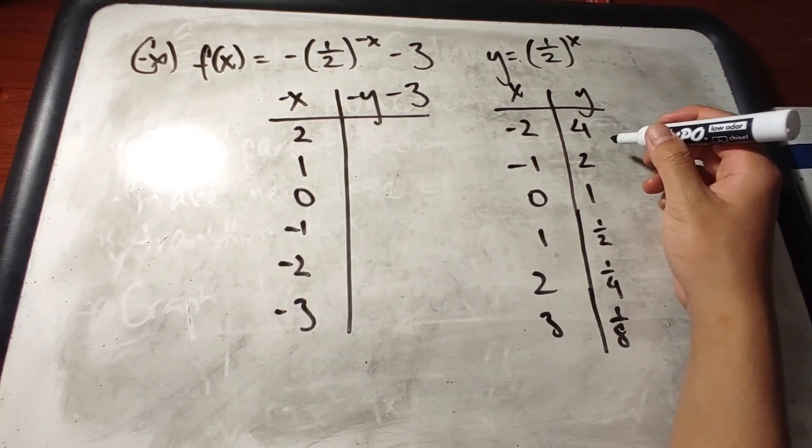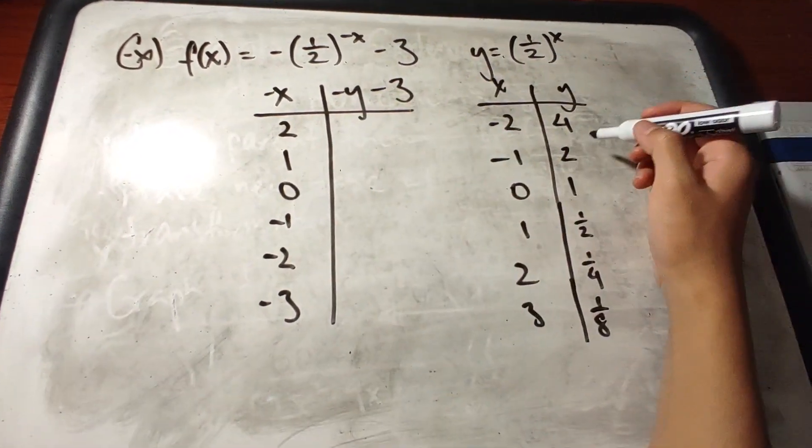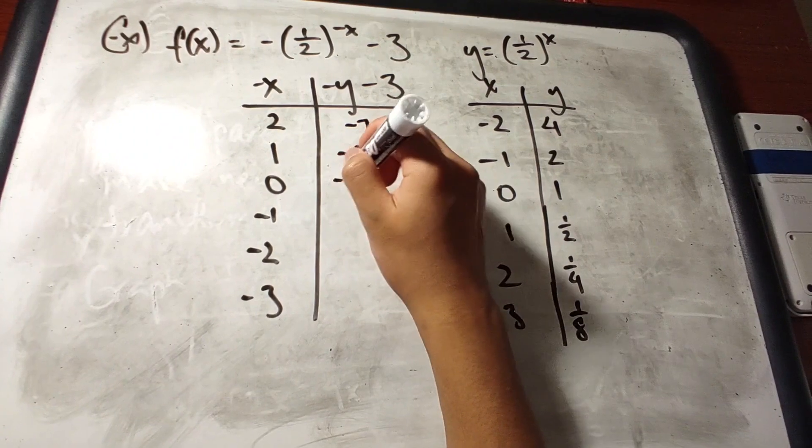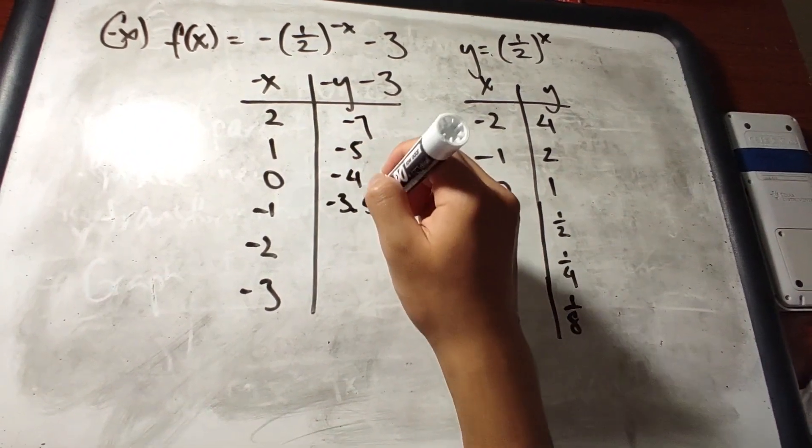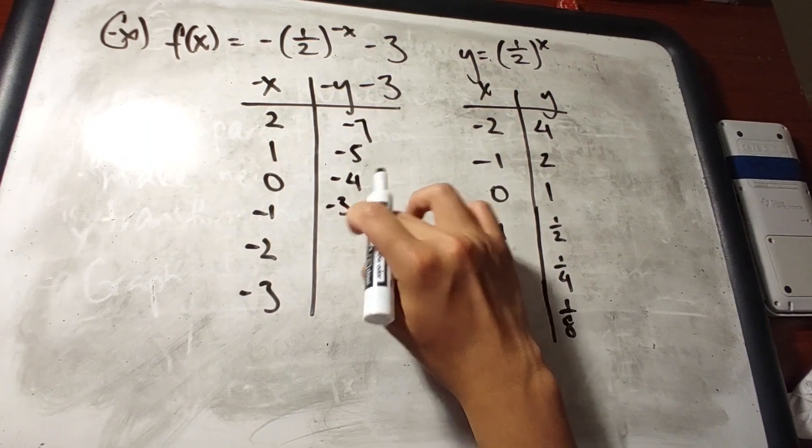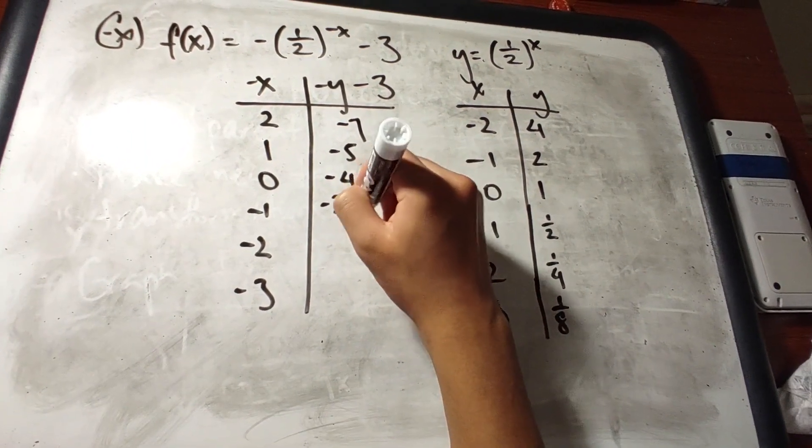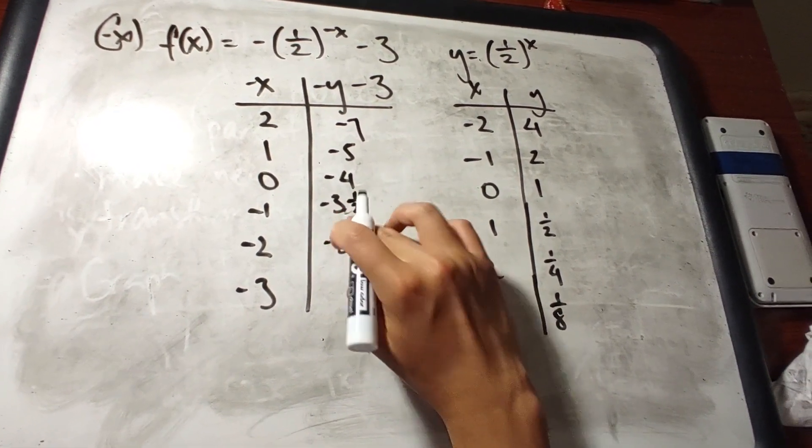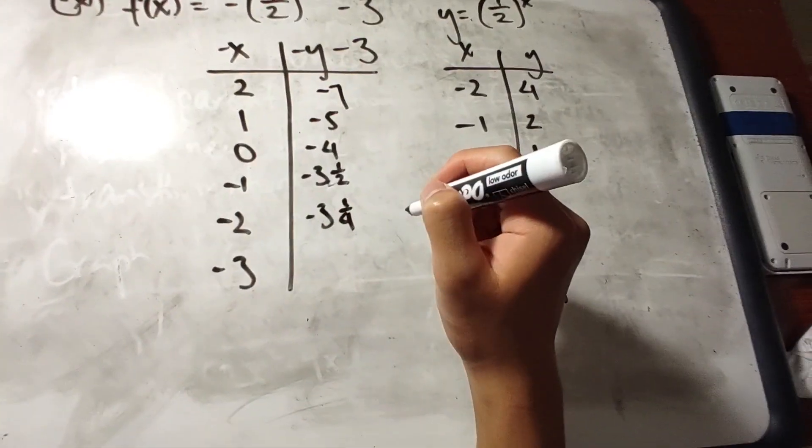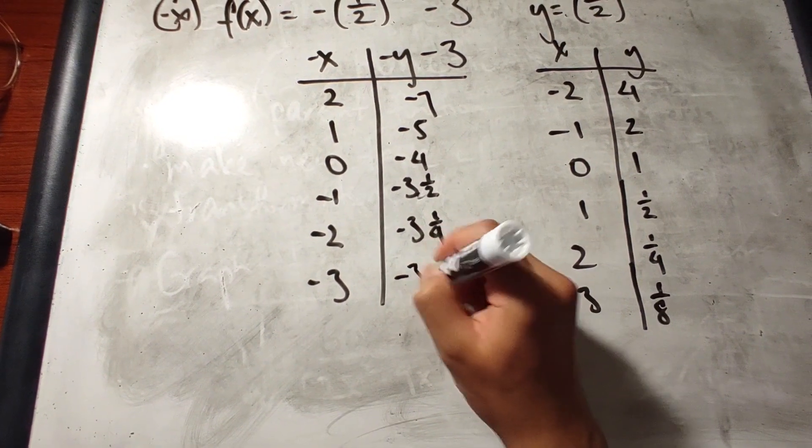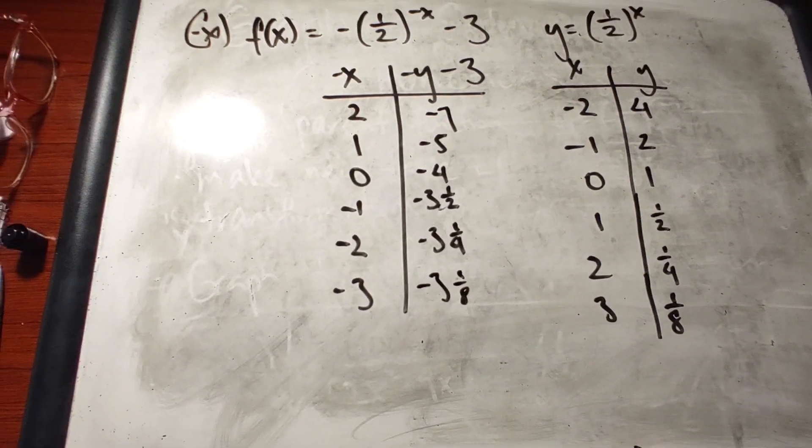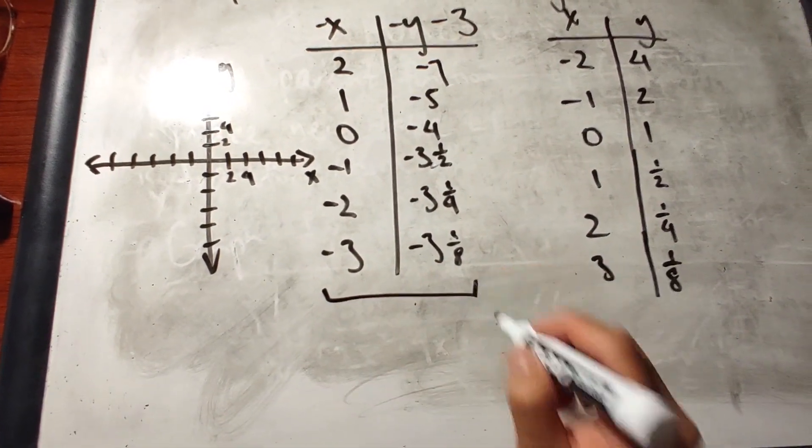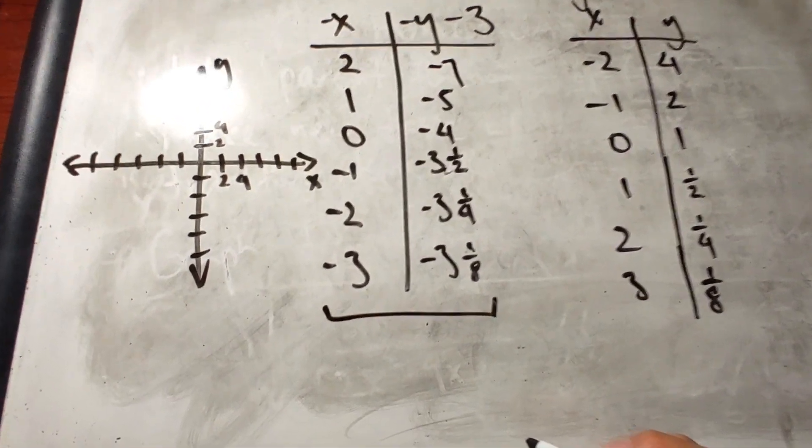When we apply this transformation to these values here, we're going to get negative 7, negative 5, negative 4, negative 3.5, or I'll turn into fraction form, negative 1 half. This will be negative 3 and 1 quarters. And this will be negative 3 and 1 eighth. So, right now, we could graph it, and now we could use the pairs in this transform table, and plug it into this graph.